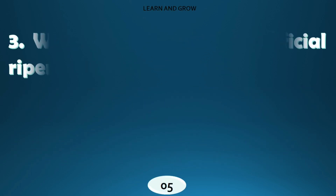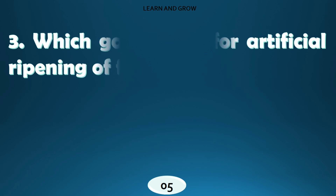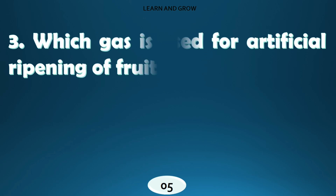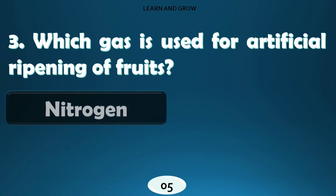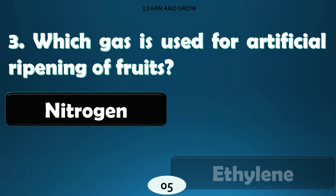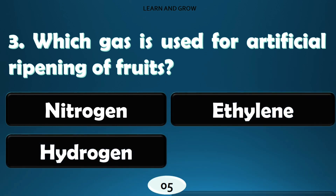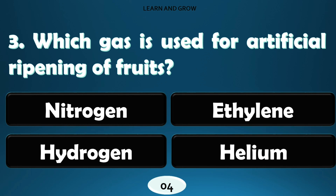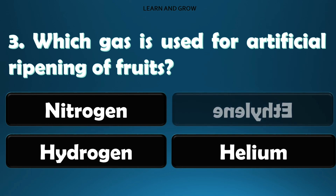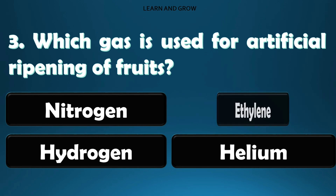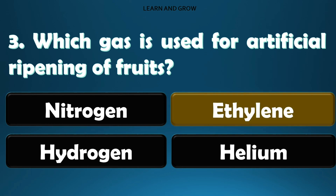Which gas is used for artificial ripening of fruits? The right answer is option B: ethylene.